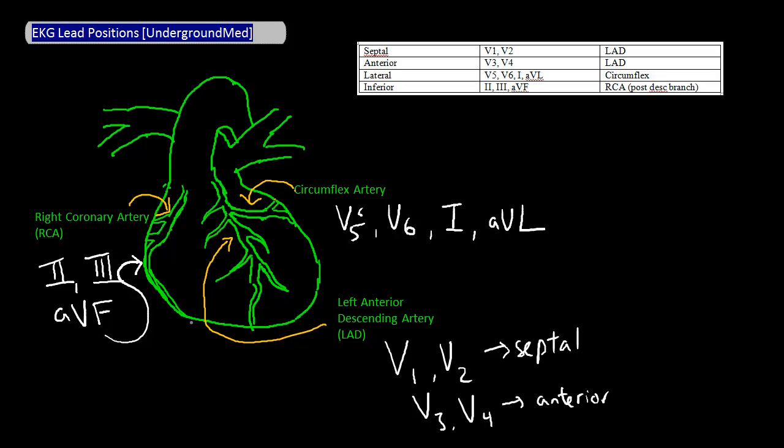So here's a quick recap. Let's look at the table. This will all become important when trying to determine which vessel an MI has occurred in.